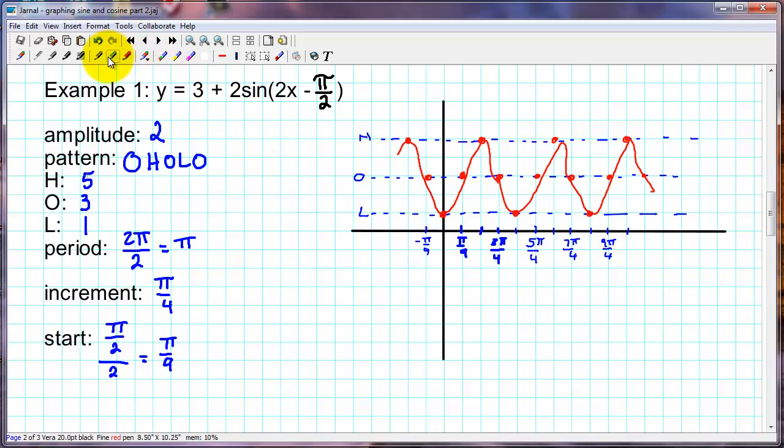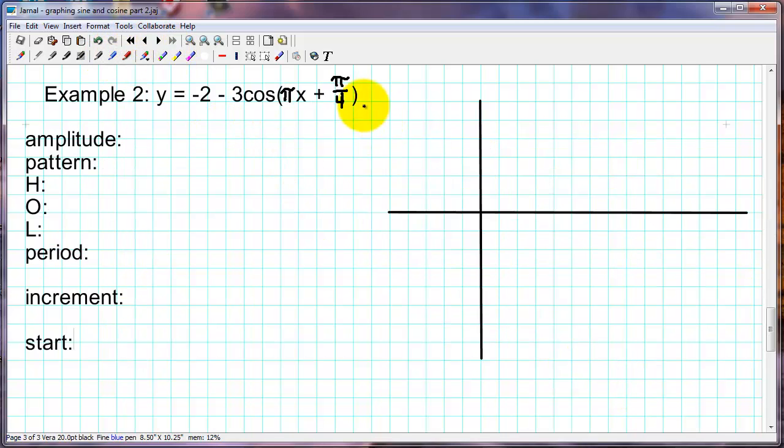Let's look at our second example here. So this time we have a negative d value, a negative a value, and a negative c value. So let's see how that works. We also have here a value of π and we'll see how that affects our results. So our amplitude is 3, the absolute value of negative 3. And our pattern, we have a cosine and it's flipped, so we start low. Our midline is at negative 2, and we're adding 3 to that, which would be positive 1, and subtracting 3, negative 5 for our high, O, and low line.